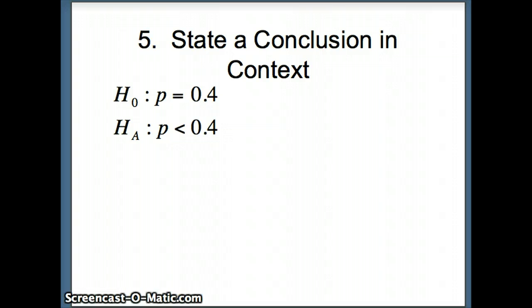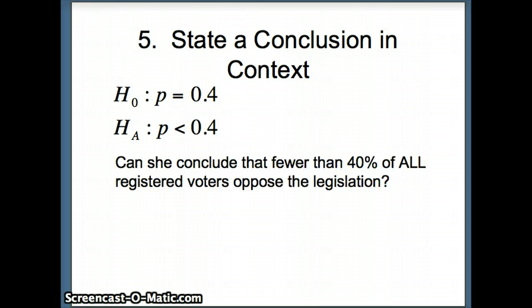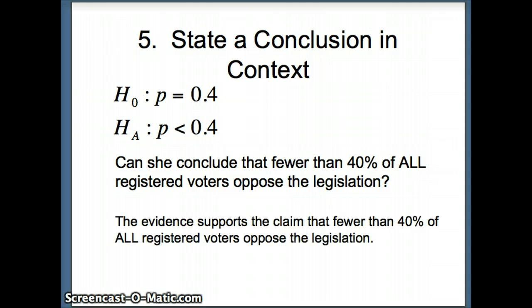We state our conclusion in context. Since we reject H₀, we conclude there is evidence that P, the population proportion, is less than 0.4. The evidence supports the claim that fewer than 40% of all registered voters oppose the legislation.